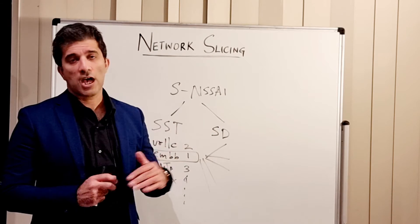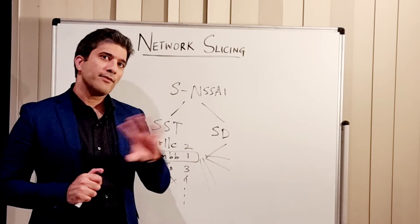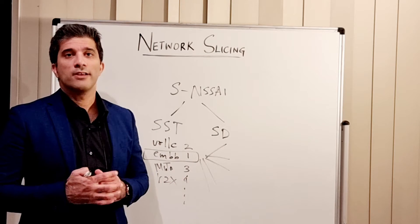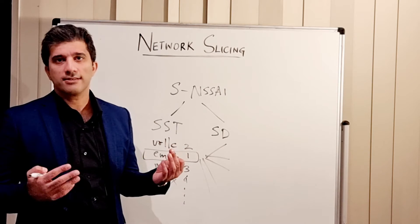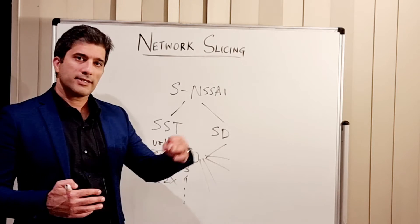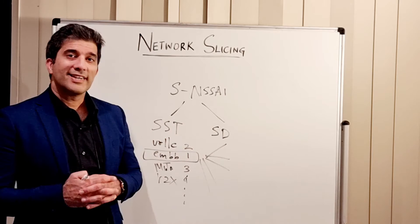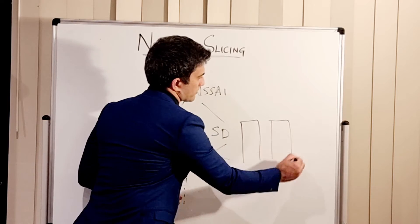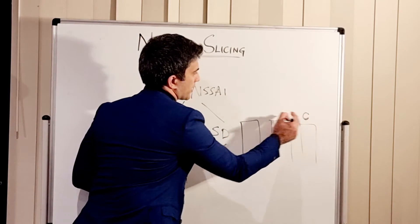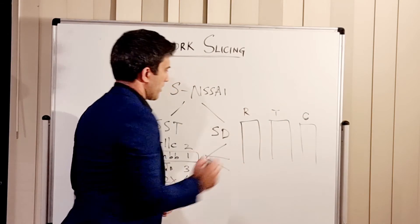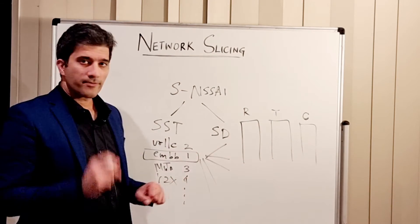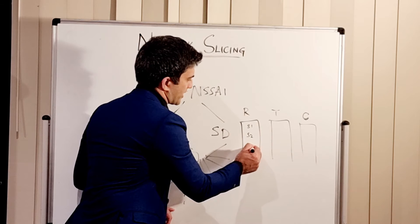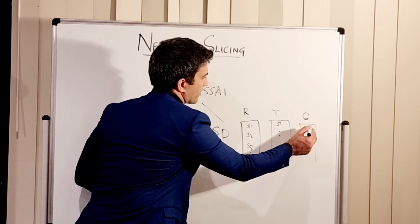The next important question is how you configure these slices to provide service differentiation. In the network diagram, you have your core, your transport, and your RAN. Based on the SST and SD, you will have a different set of configurations. So for example, you have slice 1, slice 2, slice 3 — the same differentiated configuration applies across the core, transport, and RAN layers.